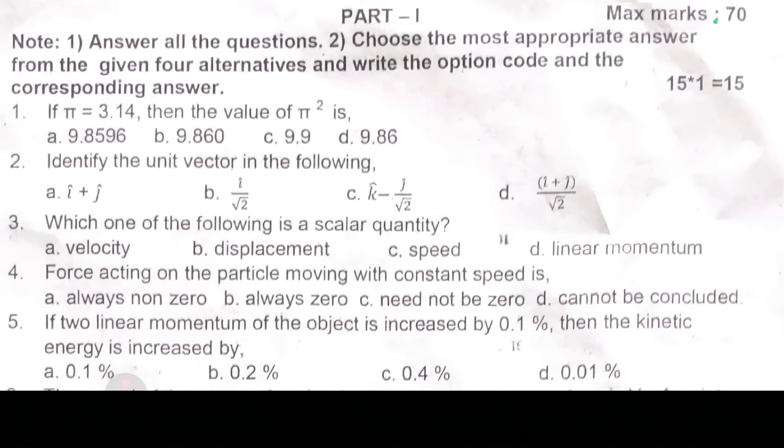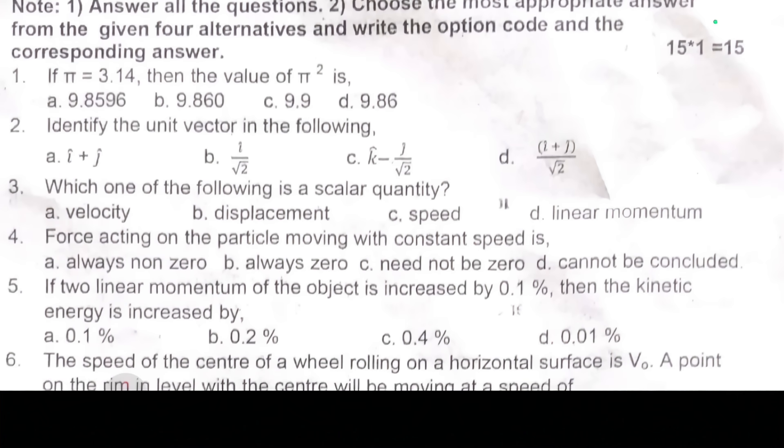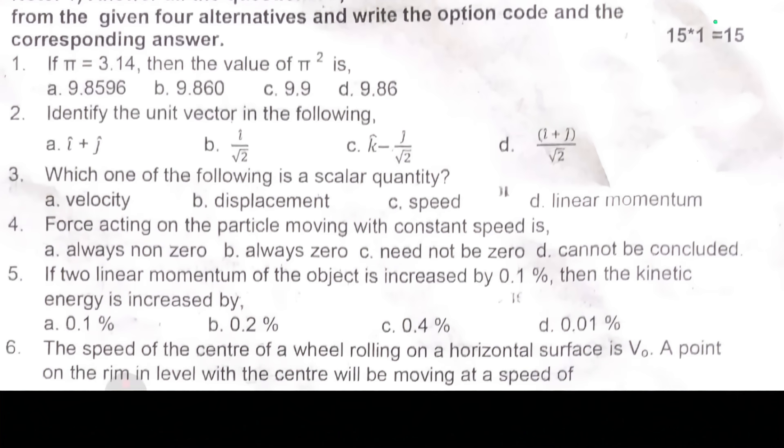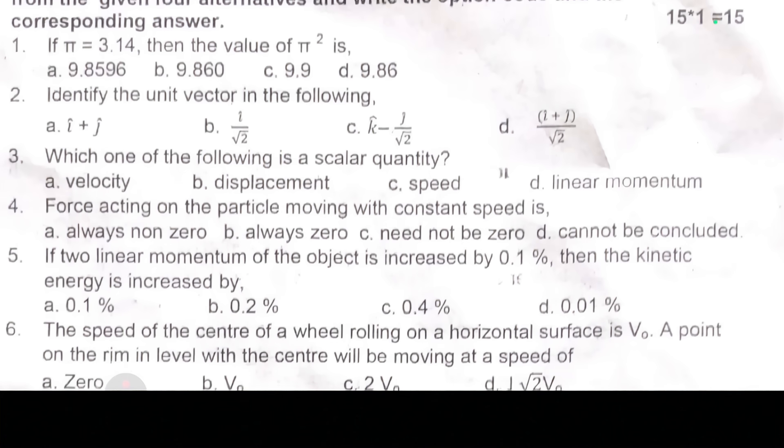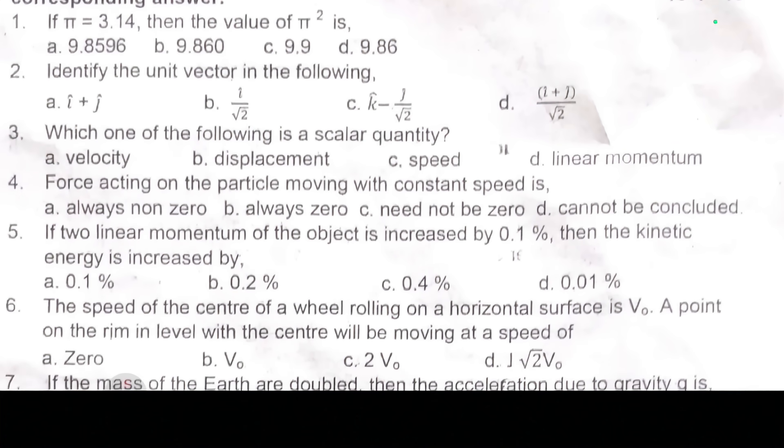So first one, if pi equal to 3.14, then the value of pi square is dash. Second one, identify the unit vector in the following. Third one, which one of the following is a scalar quantity? Fourth one, force acting on the particle moving with constant speed is dash.